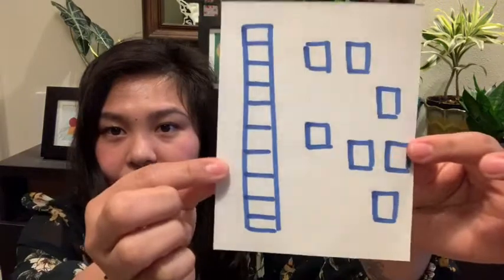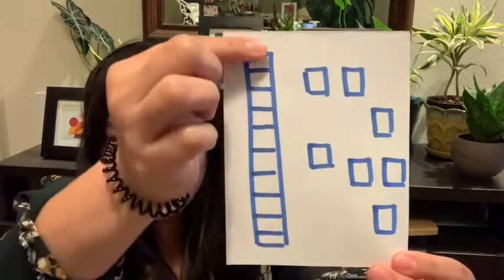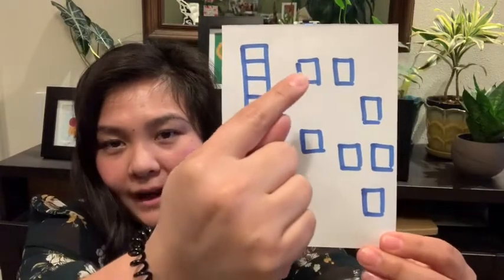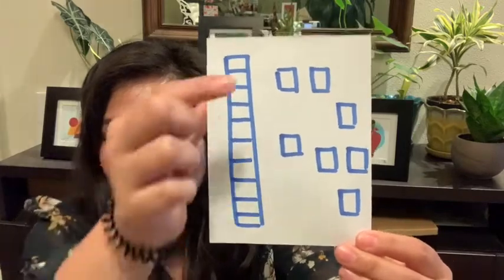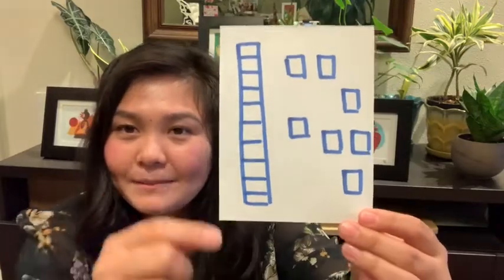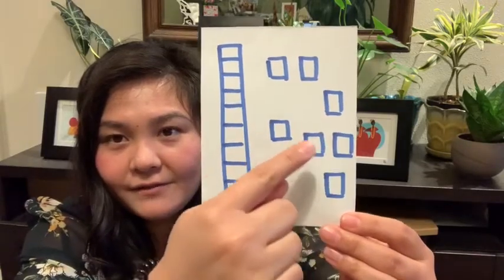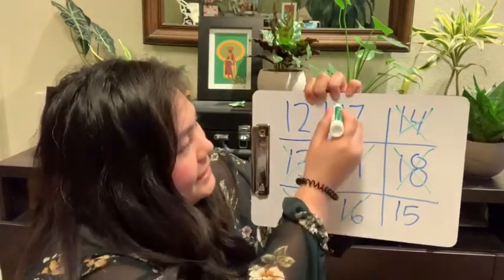Our next card. Again I see a 10 stick or group of 10 right away. We have 10 and — let's make a counting path to figure out how many 1s: 1, 2, 3, 4, 5, 6, 7. So we have 10 and 7, which is the same as 17. Let's double check by counting on from 10: 10, 11, 12, 13, 14, 15, 16, 17. So 10 and 7 is the same as 17. Find 17 on your bingo board and cross it out or put your counter there.